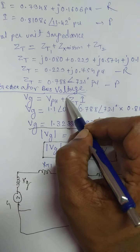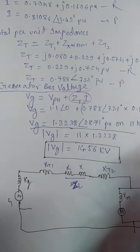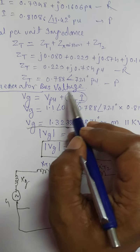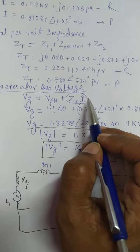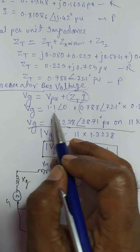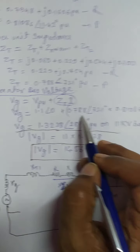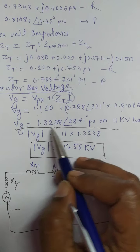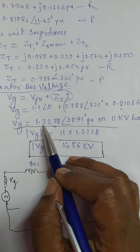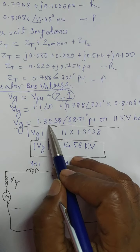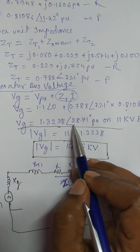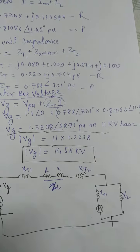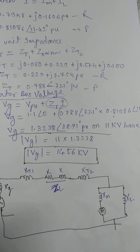VG equals 1.1 plus ZT multiplied by your current value. You will get VG in polar form as 1.3238 at an angle of 28.71 degrees per unit, on an 11 kV base.